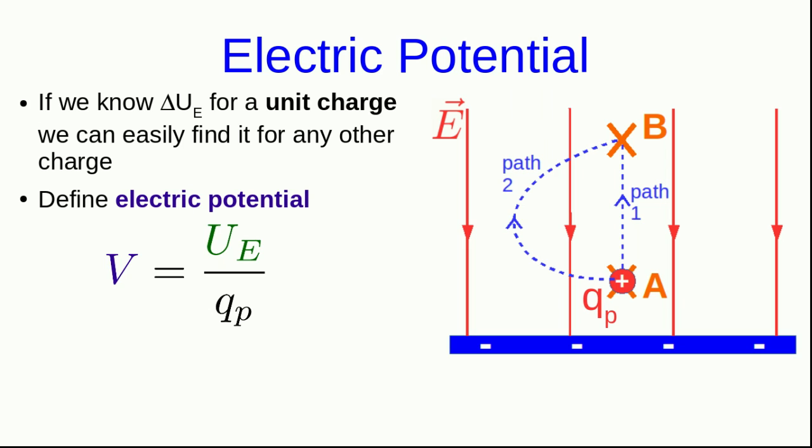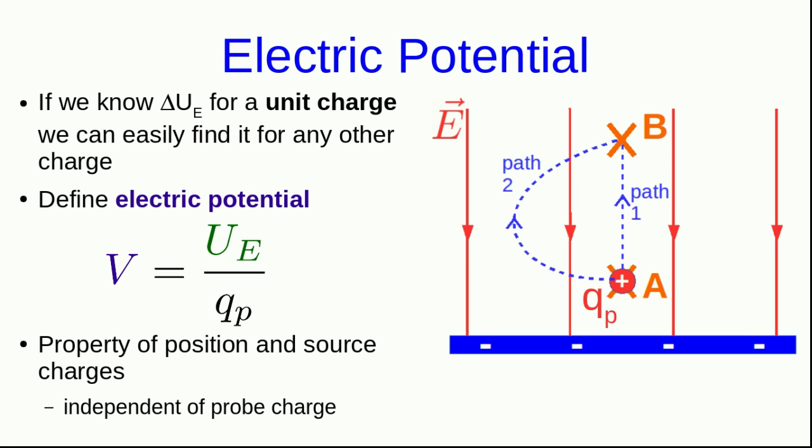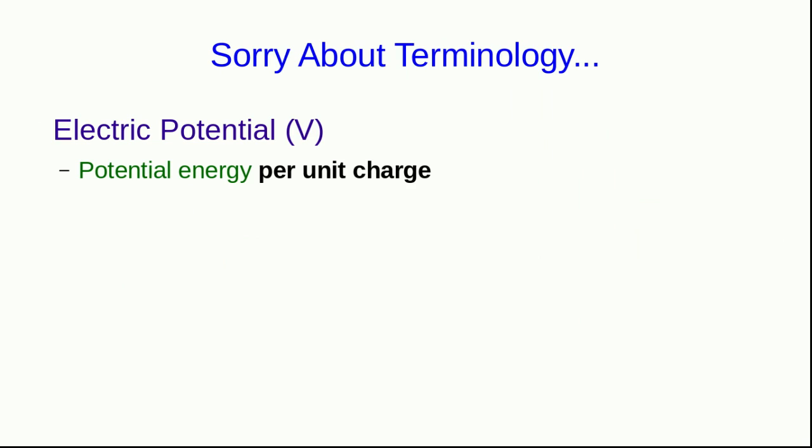Well, just like electric field, this quantity is a property of position and of the source charges. It's not a property of the probe charge. It's independent of the probe charge in exactly the same way that we saw that electric field is independent of the probe charge. I have to stop for a moment and apologize on behalf of physicists who came before me. This new quantity we've met, V, the electric potential, is potential energy per unit charge.